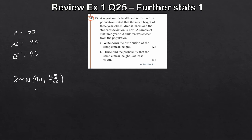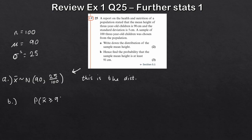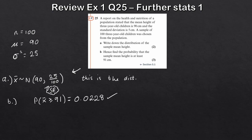Part (a) was establishing that distribution. For part (b), we need to find the probability that the sample mean height is at least 91 centimetres, so P(X̄ ≥ 91). Remember to square root the variance when entering it into your calculator. Plugging in the values, you get 0.0228.